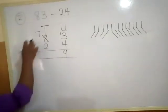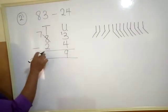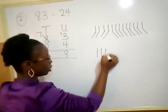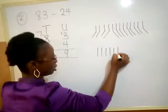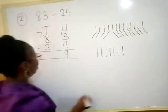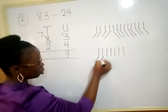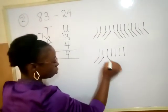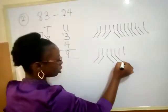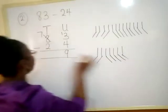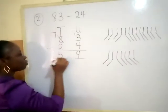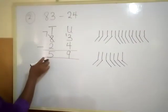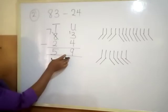Then I'll come to tens. I'll count seven, take away two. Seven minus two gives five. So eighty-three minus twenty-four will give me fifty-nine.